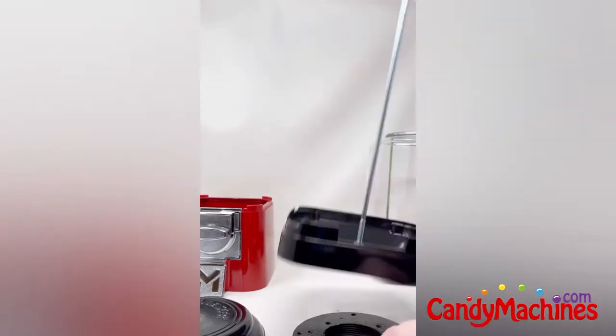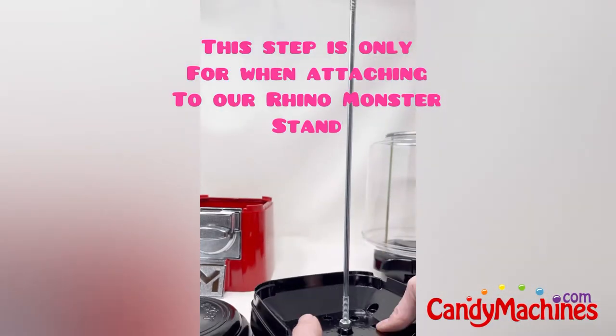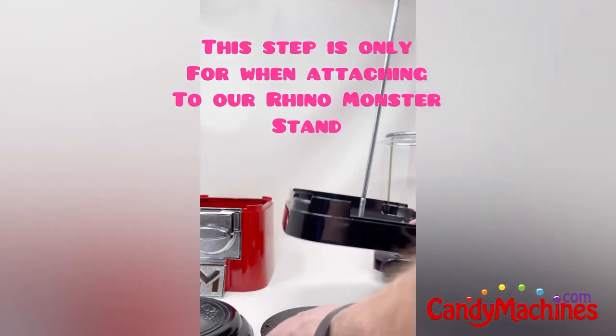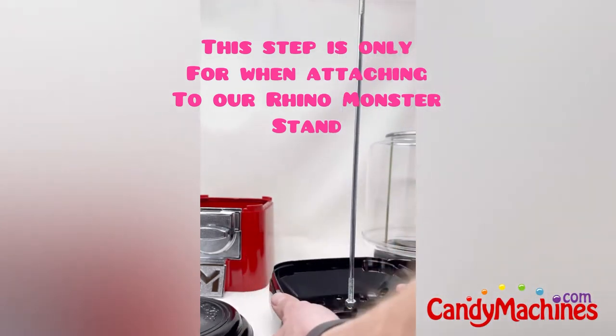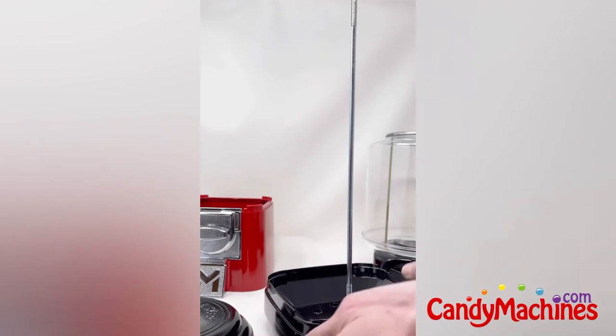Please note that the bolts or screws go down from what will be inside the machine directly into the flange. This mounting procedure is the same for all of our bulk vending machines when attaching to our Universal Rhino Monster stand.